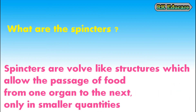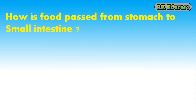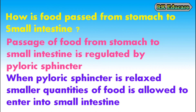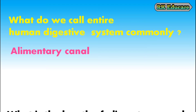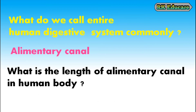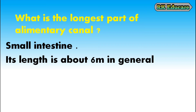What are sphincters? Sphincters are wall-like structures which allow the passage of food from one organ to the next only in smaller quantities. How is food passed from the stomach to the small intestine? The passage of food from the stomach to the small intestine is regulated by the pyloric sphincter. When the pyloric sphincter is relaxed, smaller quantities of food are allowed to enter into the small intestine. The entire human digestive system is commonly known as the alimentary canal. Its length is about 9 meters. Small intestine is the longest part of the alimentary canal — about 6 meters in length.